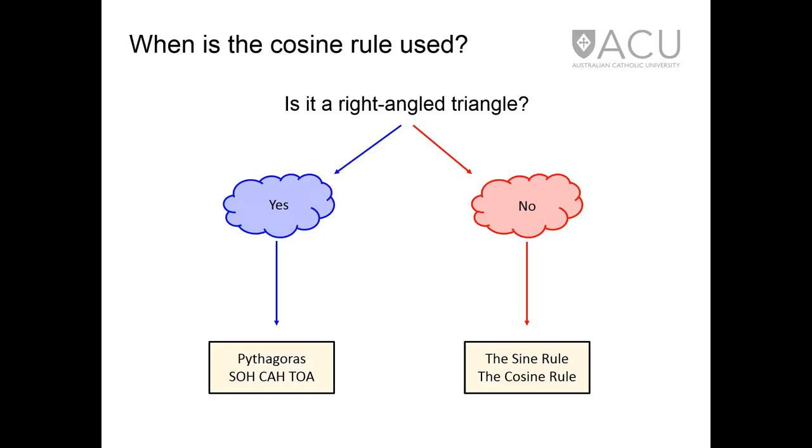The cosine rule is to be used for non-right-angled triangles. If the triangle is a right-angled triangle, you might consider using Pythagoras or SOHCAHTOA to solve it. If the triangle is not a right-angled triangle, consider using the sine rule or the cosine rule to solve it.